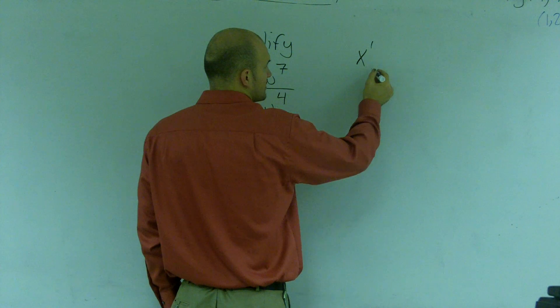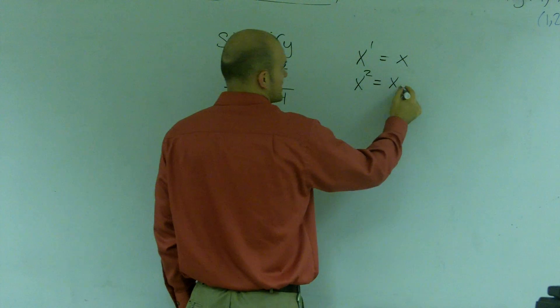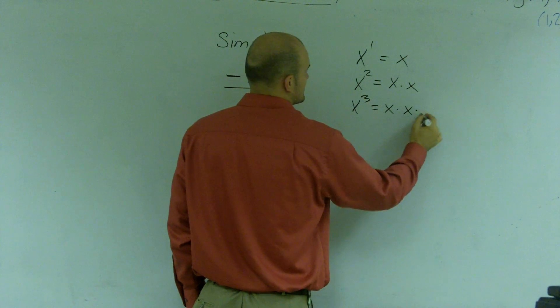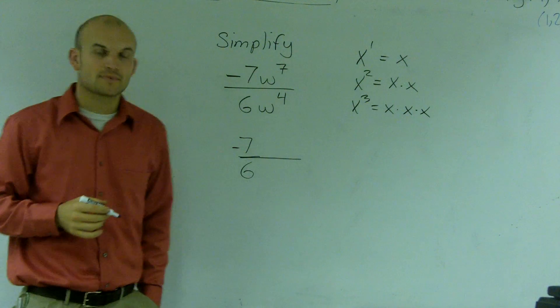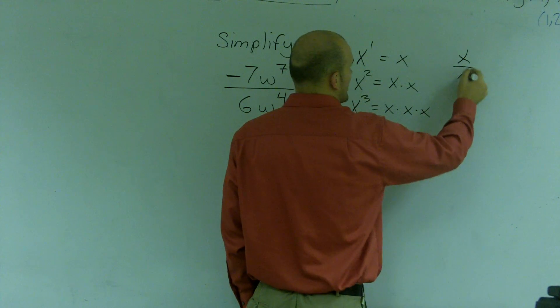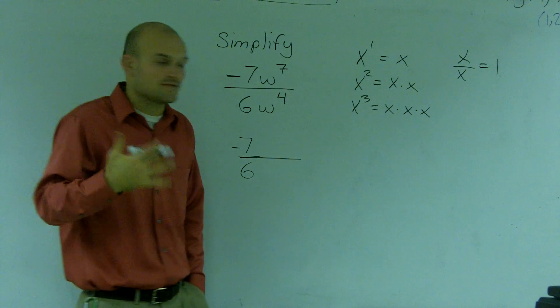x to the first power is really just equal to x. x squared tells me to do x times x. And x cubed tells me to do x times x times x. Another thing you need to remember is x divided by x equals 1. Any number divided by itself is going to equal 1.